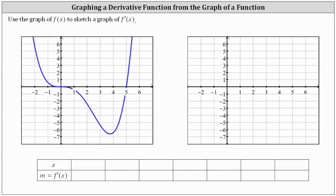We want to use the graph of f of x to sketch a graph of f prime of x. Remember, the derivative function values are equal to the slopes of the tangent lines to f of x at given values of x. So to approximate derivative function values, we will sketch several tangent lines and determine the slopes of the tangent lines. We will record the information below on the table. Each column on the table will give us one point on the graph of f prime of x.